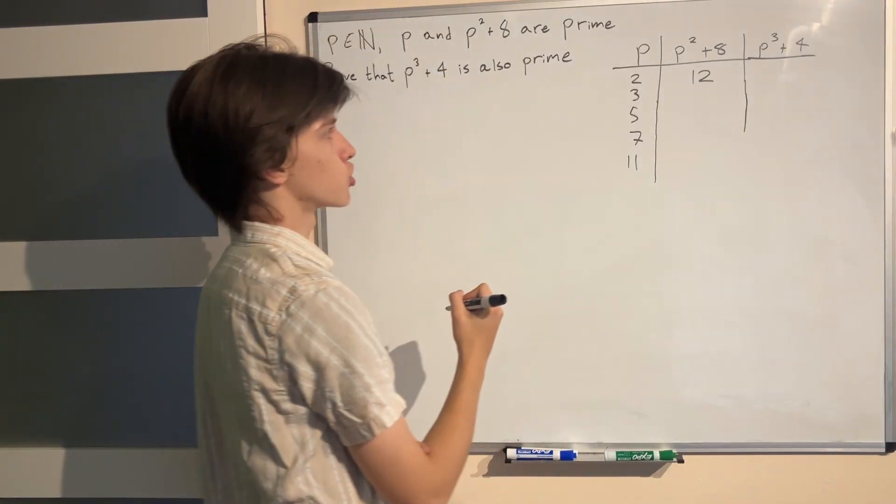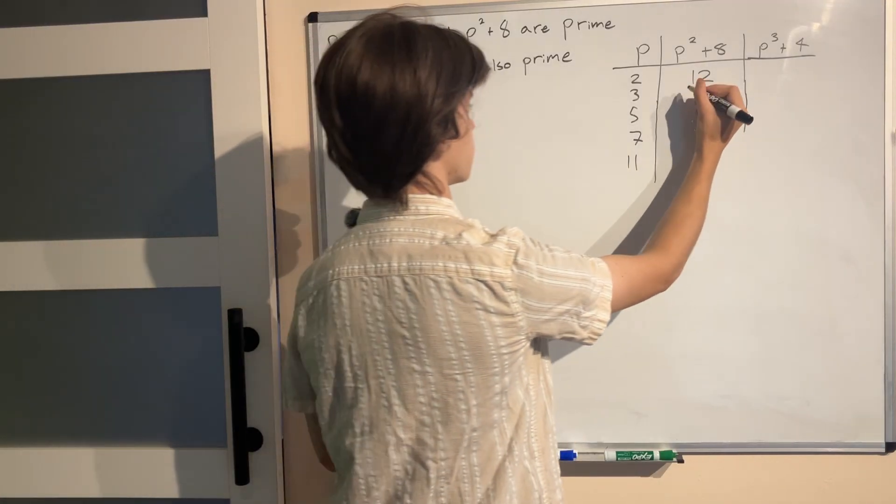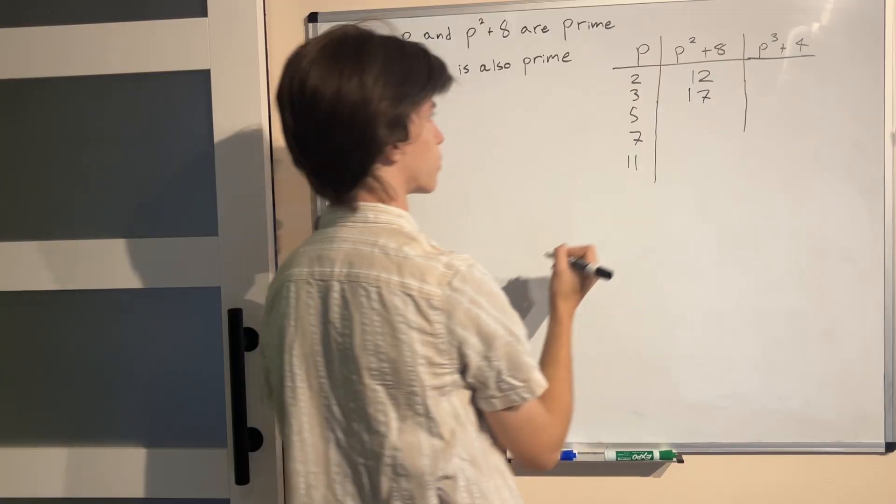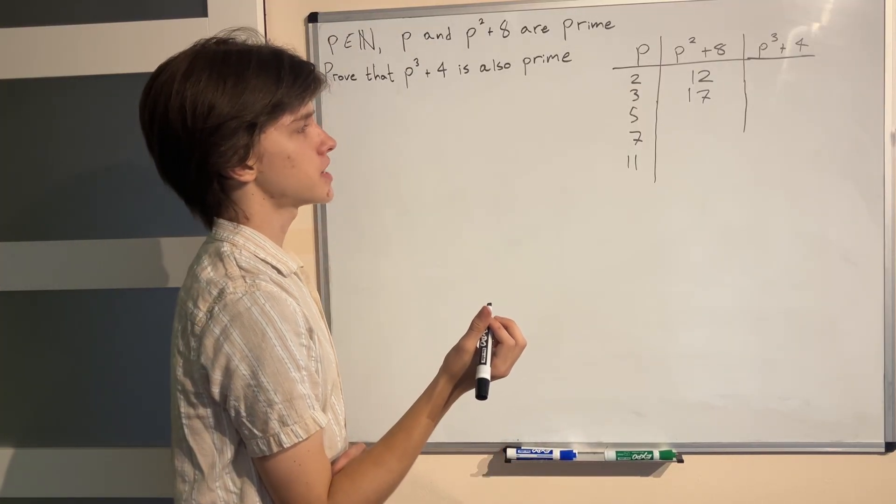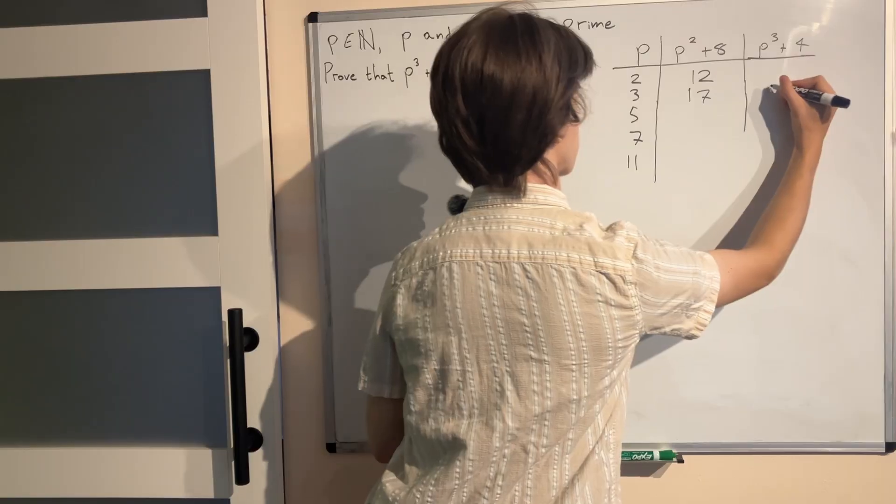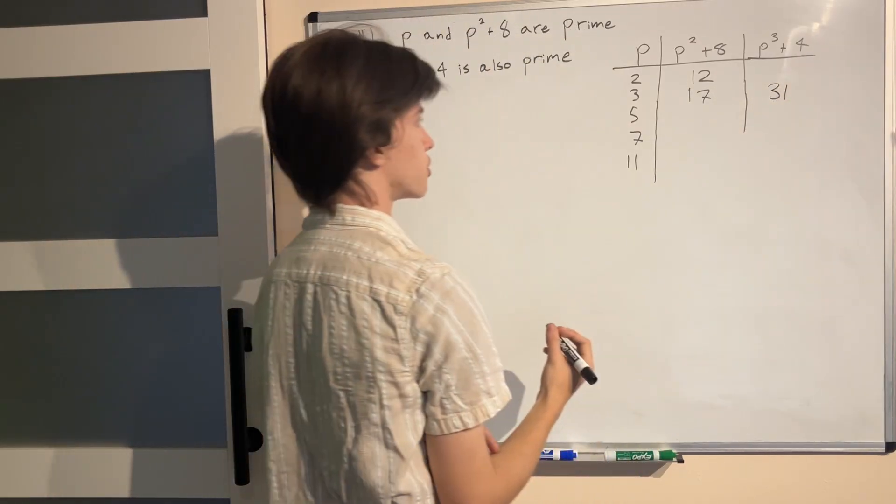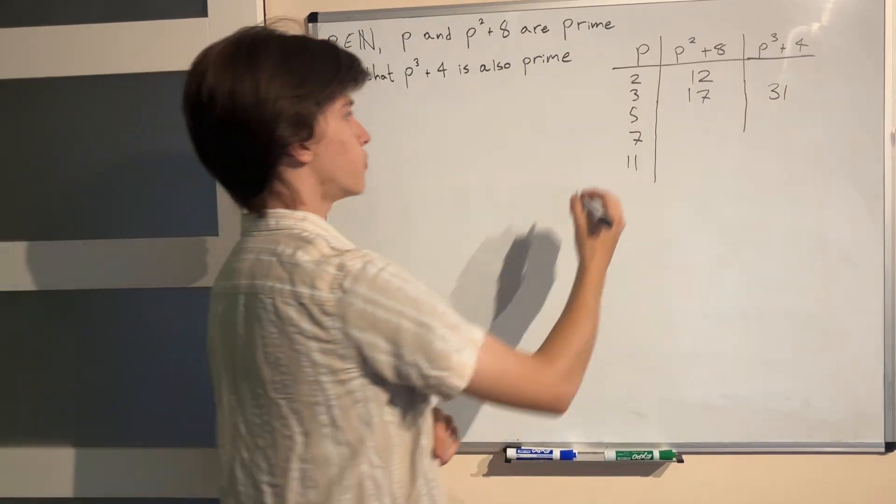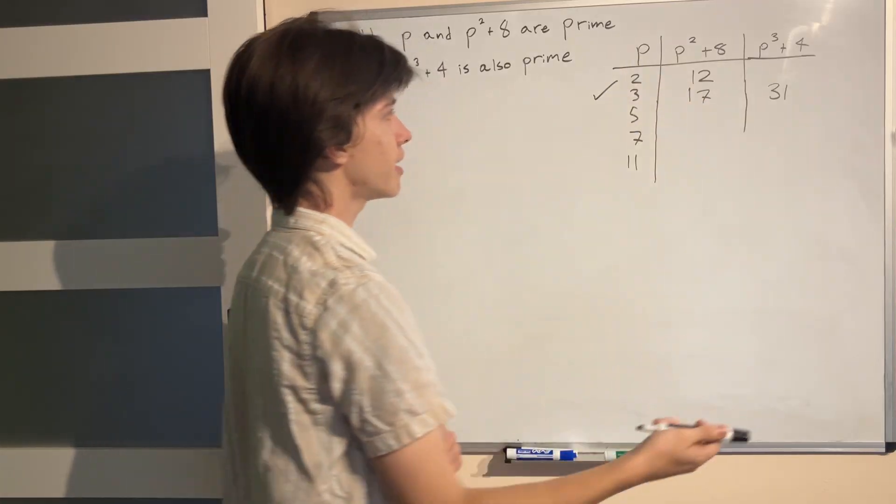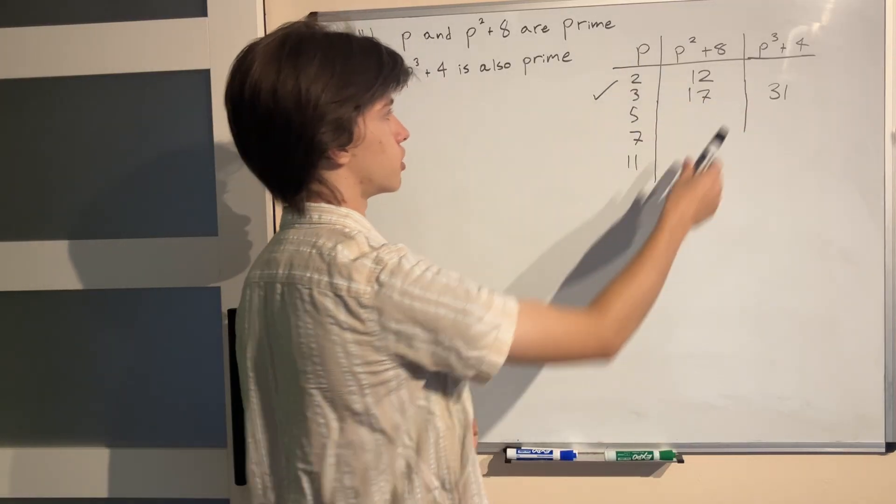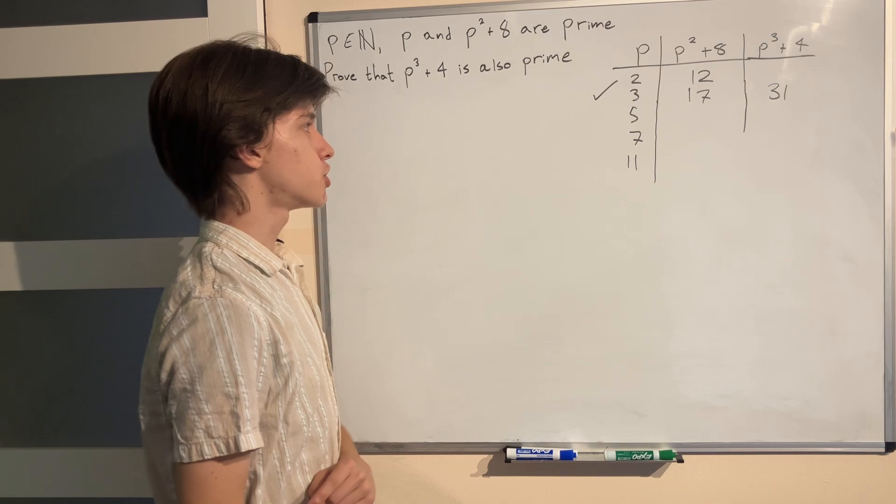Now for p equals 3, p² + 8 that's going to be 9 + 8 which is 17 which works out. And then for p³ + 4 that's going to be 27 + 4 which is 31. So in fact the case of p equals 3 does work. Both p and p² + 8 are prime and they also make p³ + 4 prime which is great.